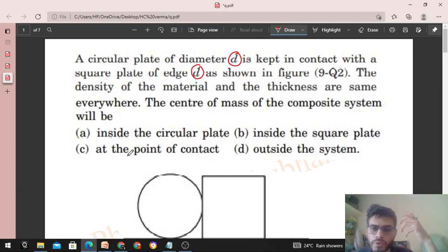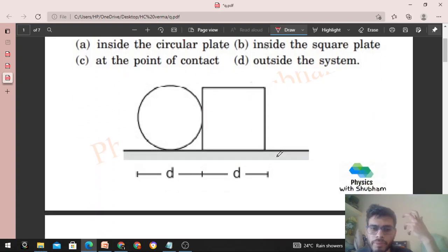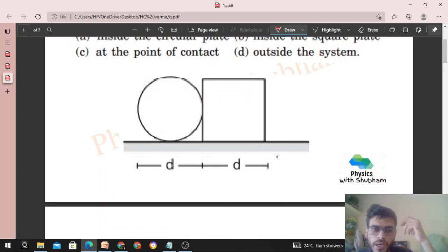The center of mass of the composite system will be - kya aapko batana hai - inside the circular plate ho ga ya phir inside the square plate ho ga. Dekho agar mein kahu yeh joh circular disk hai, iska center of mass aapka ho ga iske center pere. Is square plate, yeh joh square plate hai, iska center of mass aapka ho ga iske center pere.